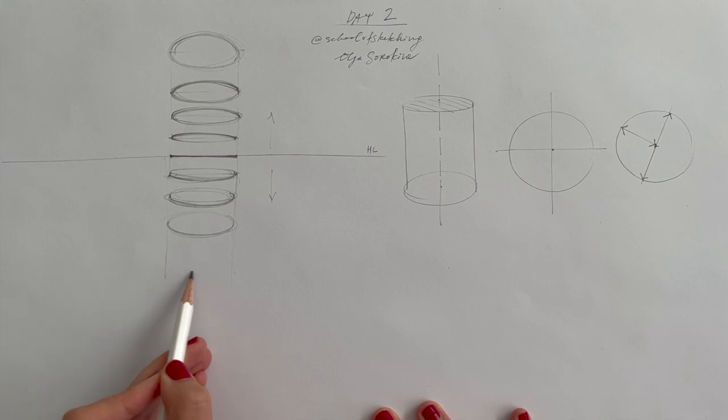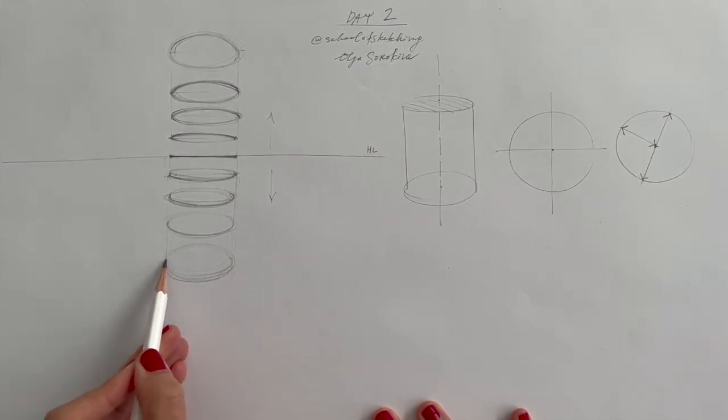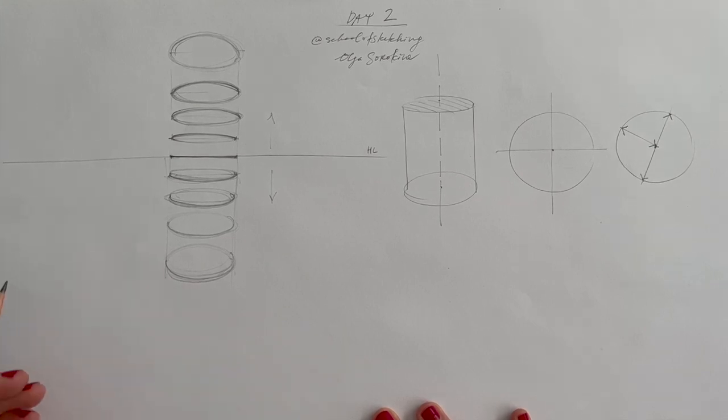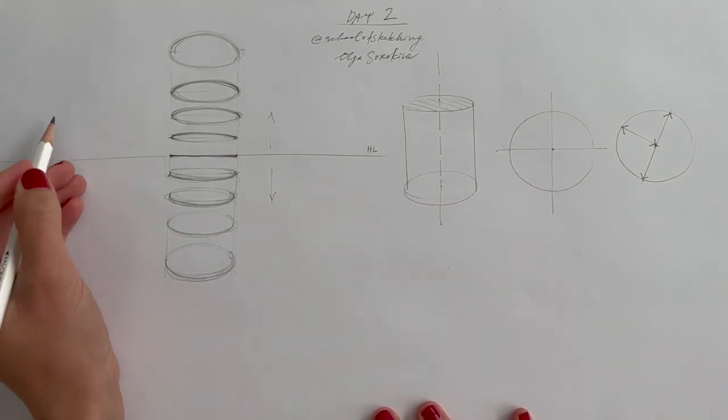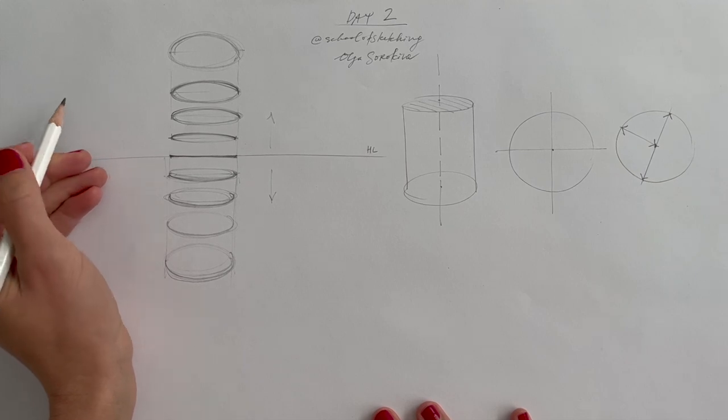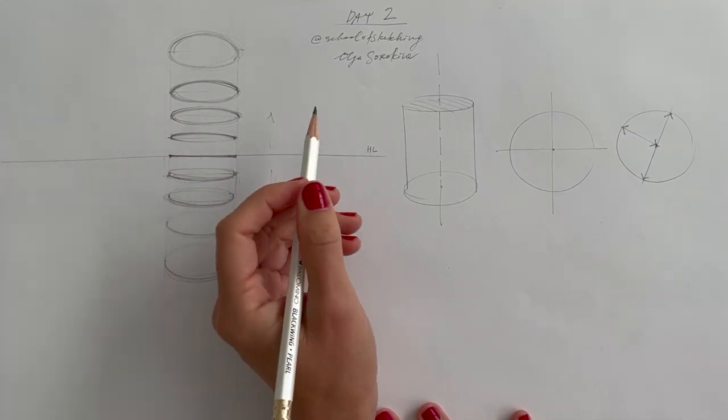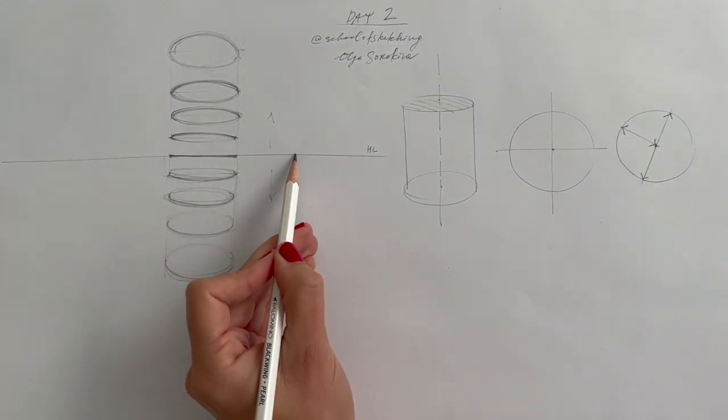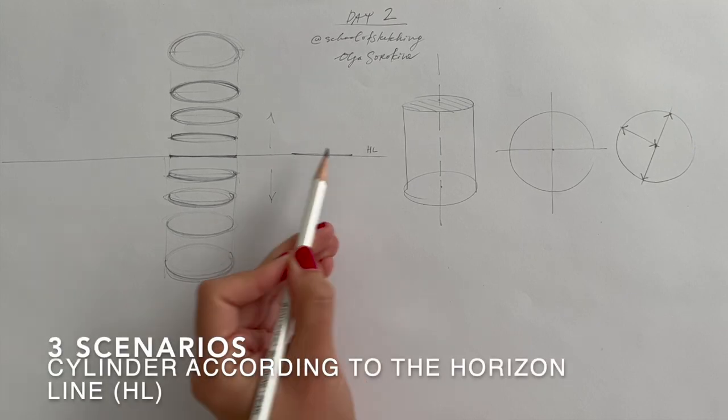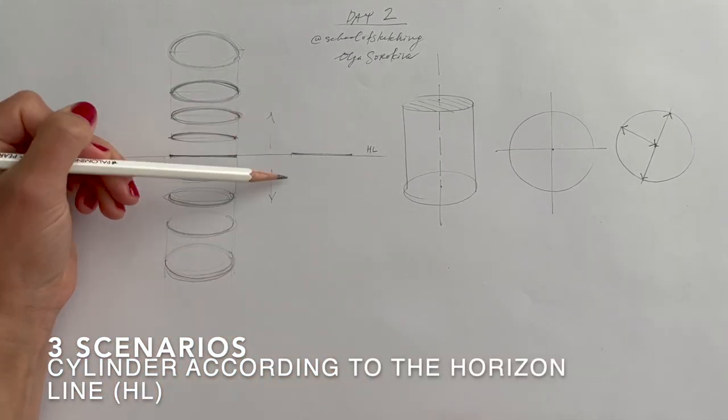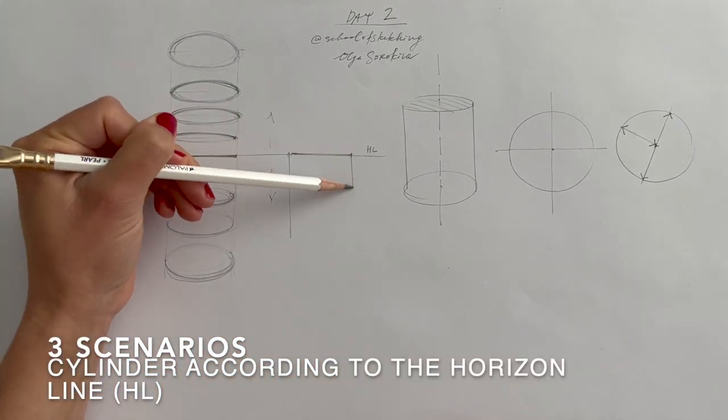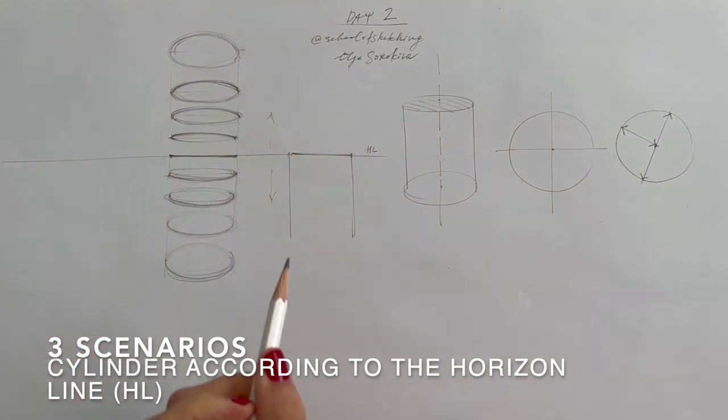You can also think about a dinner plate or something like that. And you can take a dinner plate at home right now and do this experiment yourself. So first you locate the dinner plate right on the level of your eyes and then you move it up and then you move it down. And now let's take a look at three different positions of our cylinder according to the horizon line.